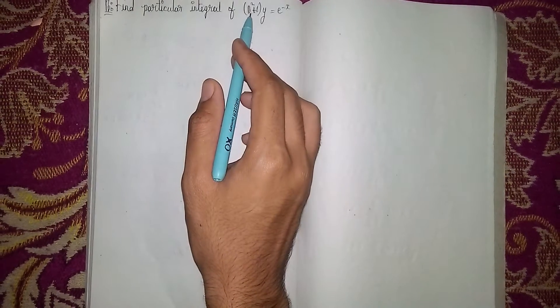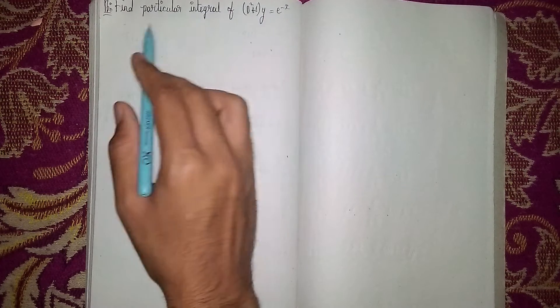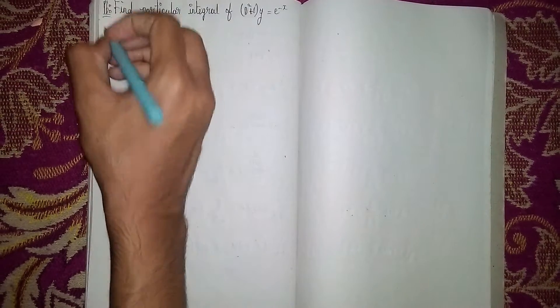Welcome back to my channel. In this question, find the particular integral of (D² + 1)y = e^(-x). This is a non-homogeneous linear differential equation. So first, we write the solution and explain what we will do.